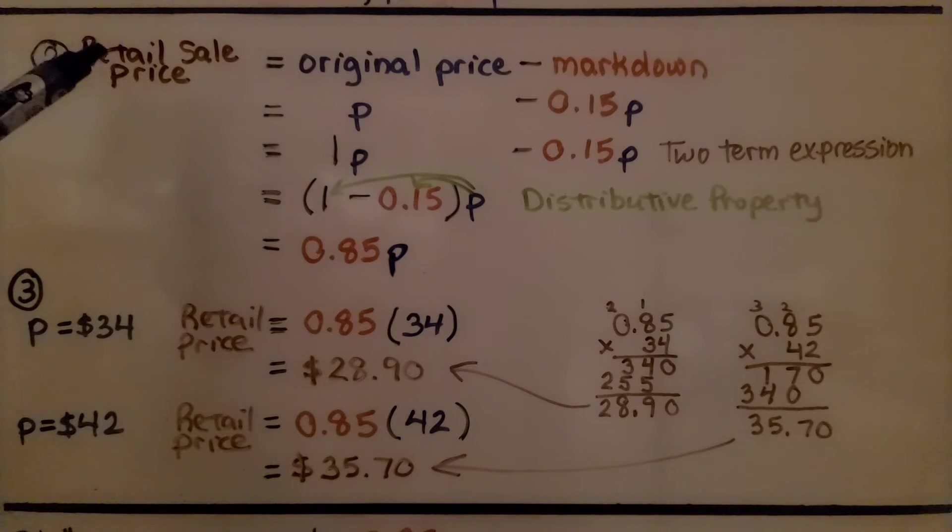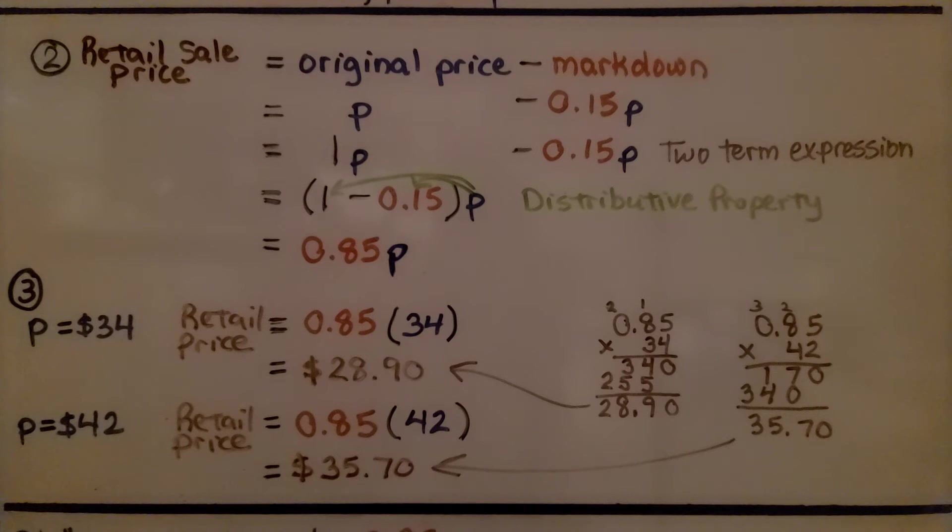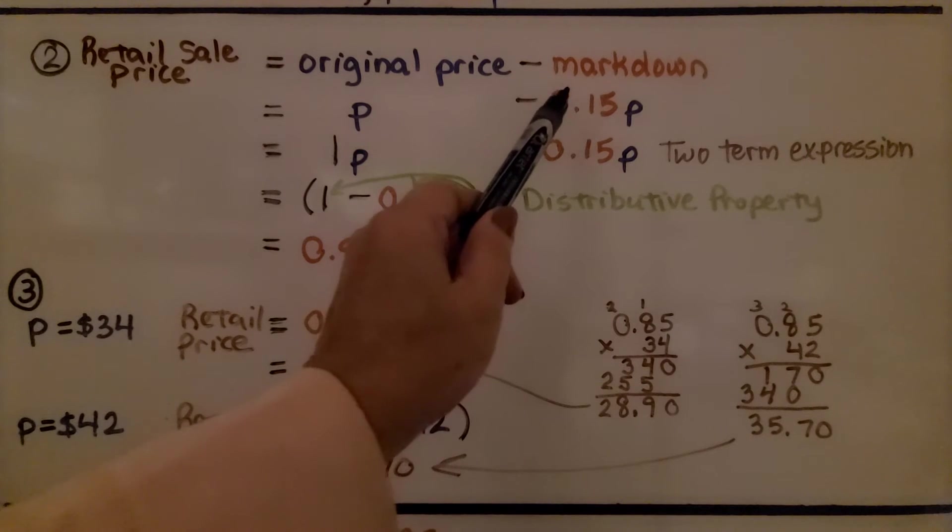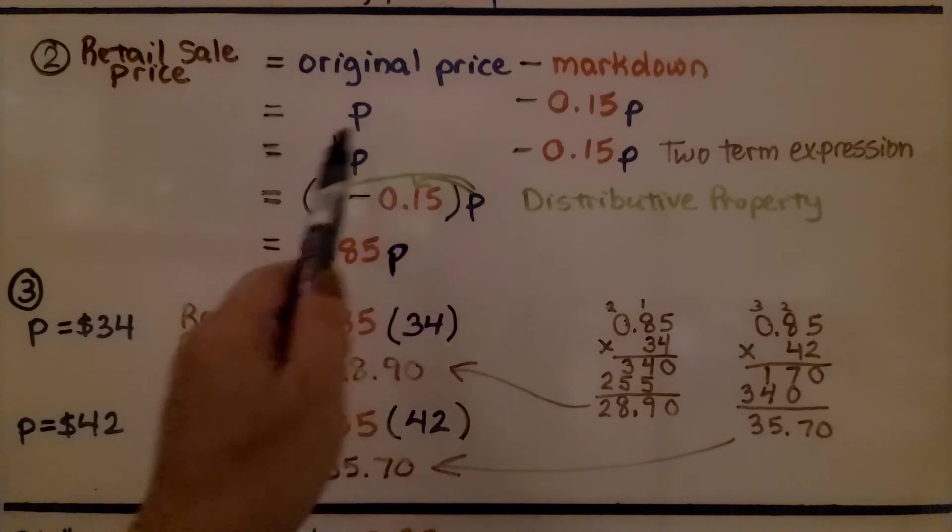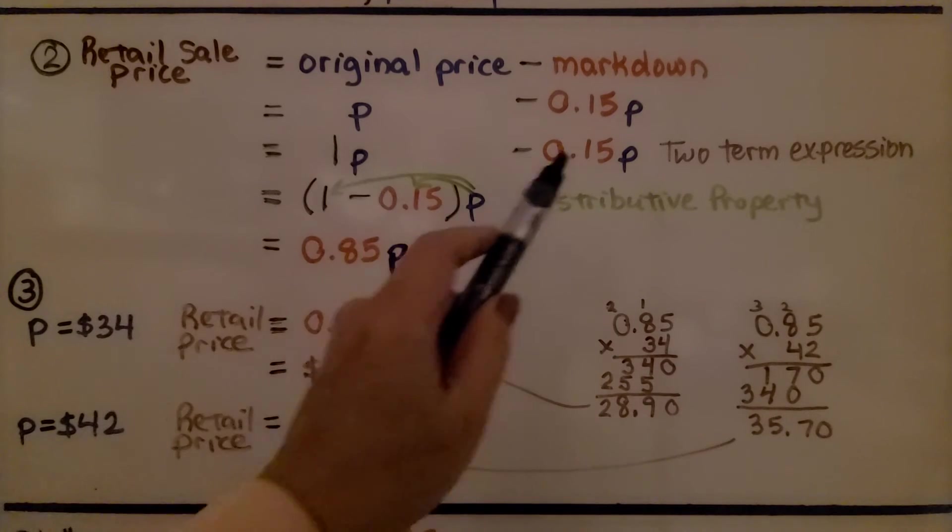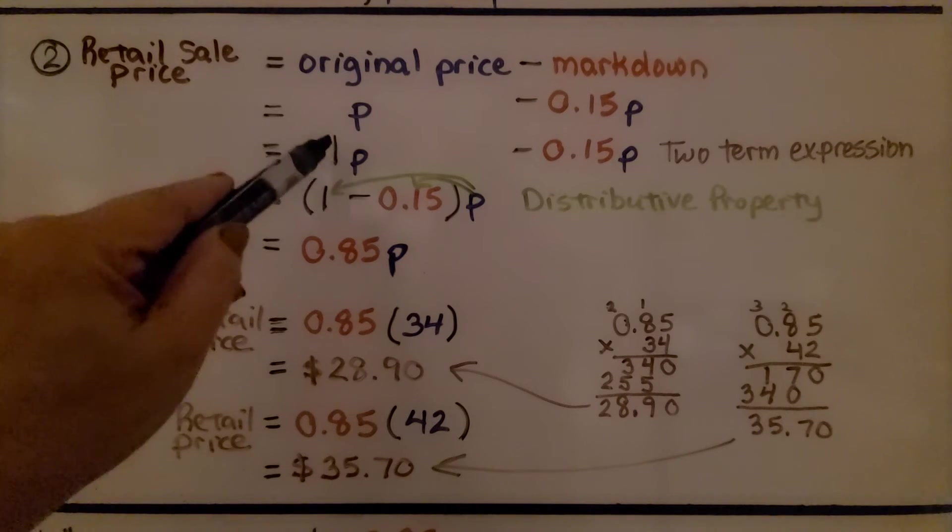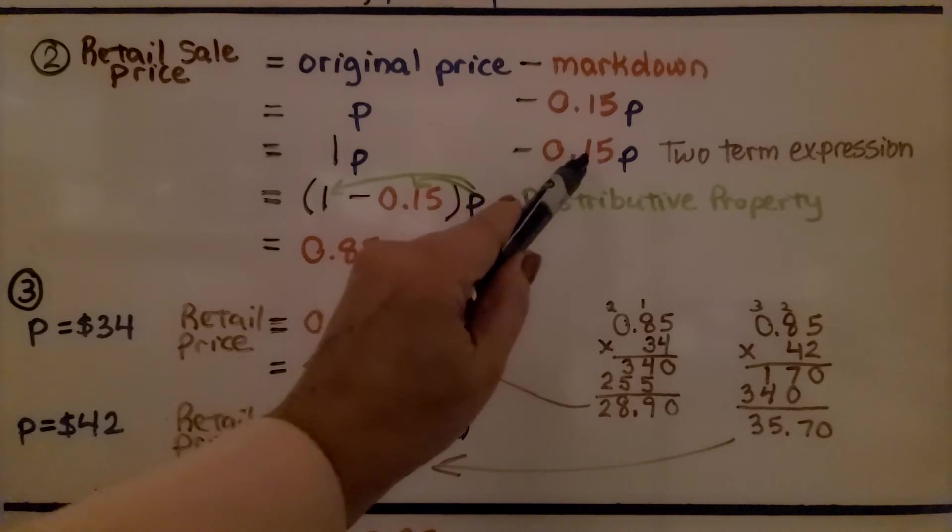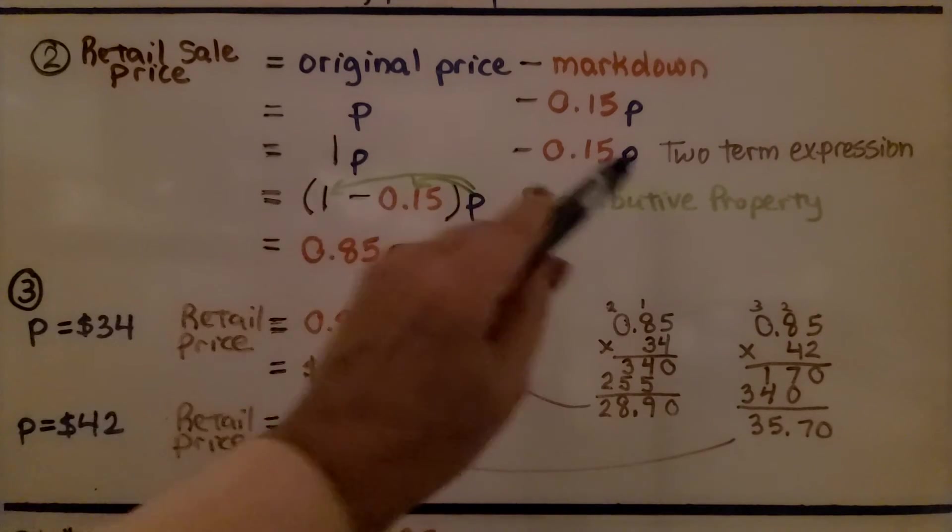So we have the retail price is equal to the original price minus the markdown. The markdown is 15%. So we write it as 0.15 as a decimal. This is a two-term expression because we have a term here and a term here separated by the minus sign. We can do one whole minus 0.15. That's the distributive property. They both have a P.